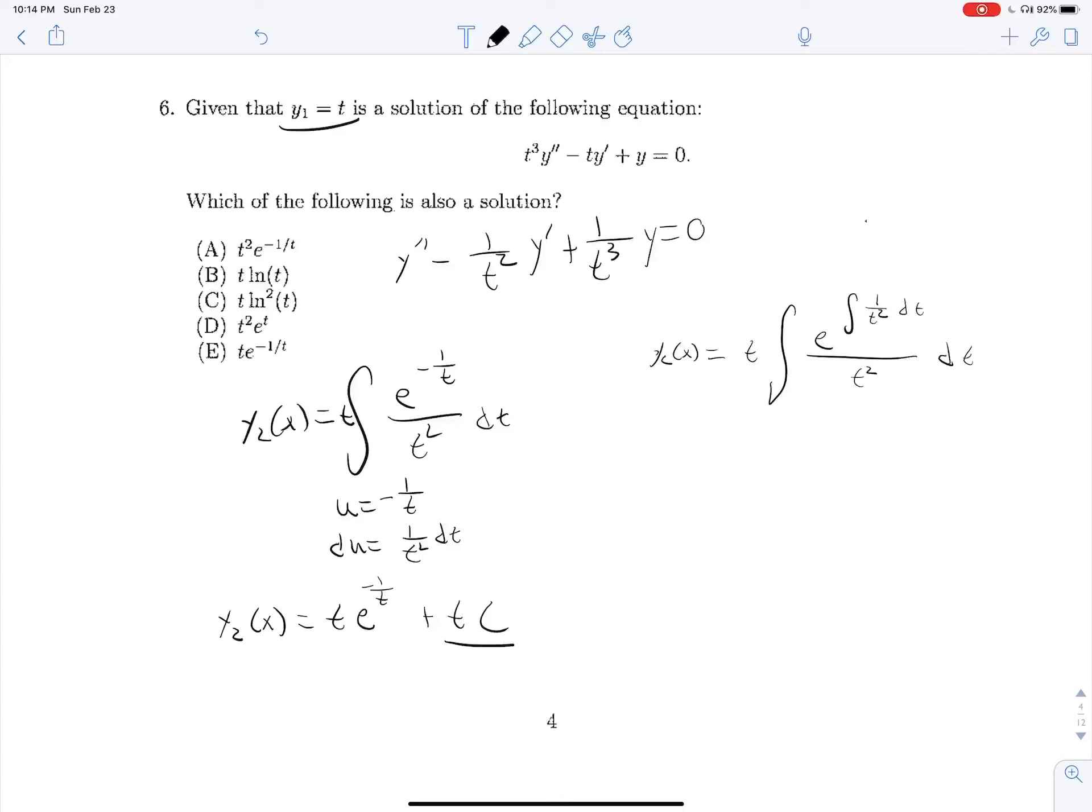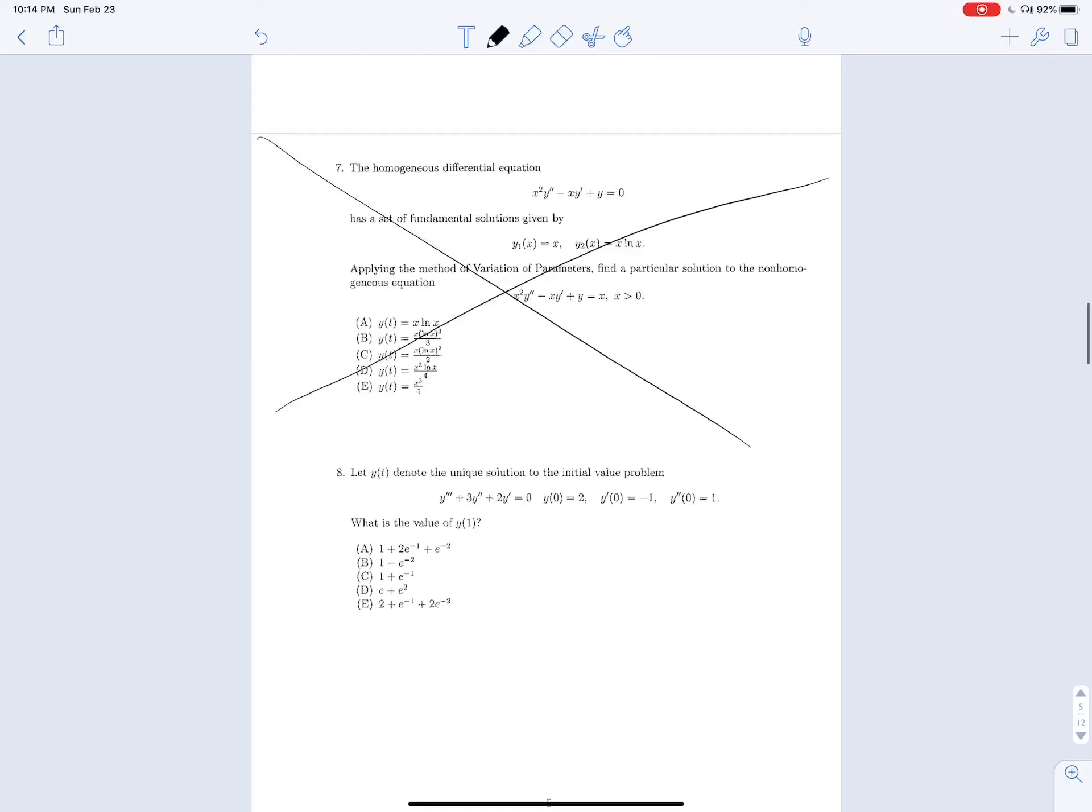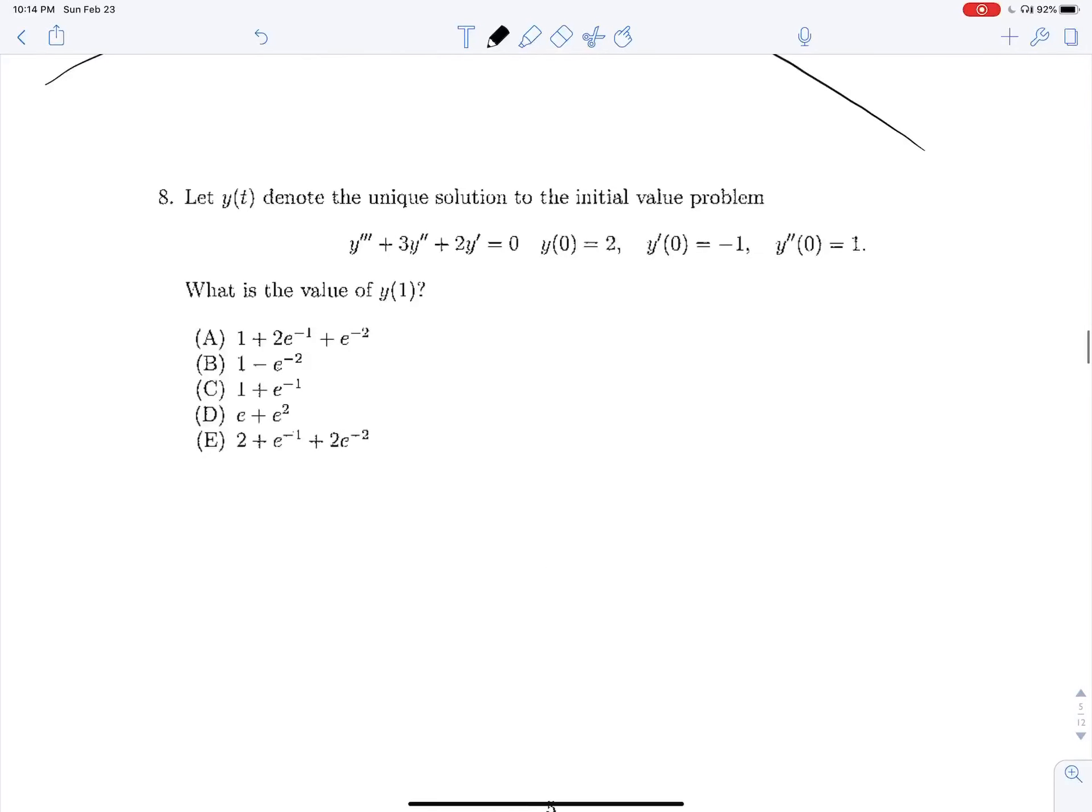This will just be e to the u plus c where u is negative 1 over t, and we're still distributing, so this will be tc. And we have actually solved our question here because c can be any value, but if c is equal to 0, we see that y2 of t is t e to the negative 1 over t, which is exactly answer choice e. So 6, 6 is confirmed as e.